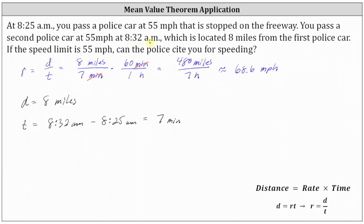So even though you weren't speeding at 8:25 a.m. or 8:32 a.m., because your average speed over this time was 68.6 miles per hour, there must be at least one time in this time interval where you were going 68.6 miles per hour. And therefore, the answer is yes, you can be cited for speeding.